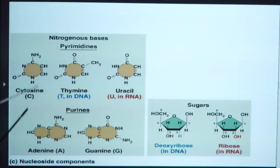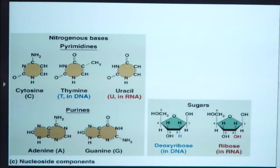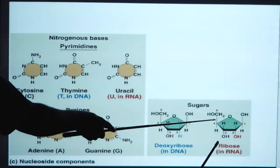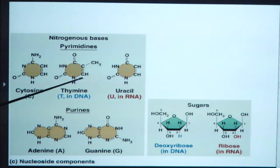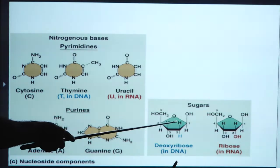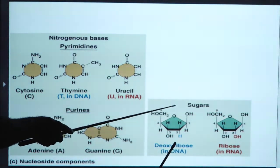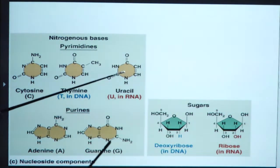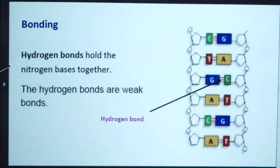These are the pyrimidines and these are the purines. In purines, we have adenine and guanine. In the DNA molecule, the sugar is deoxyribose sugar; in RNA, it is known as ribose sugar. Hydrogen bonds hold the nitrogenous bases together. Hydrogen bonds are weak bonds in nature — between nitrogenous bases, hydrogen bonds hold two bases with each other.